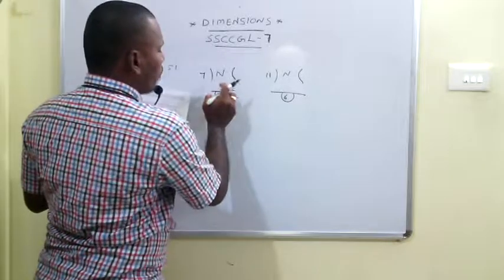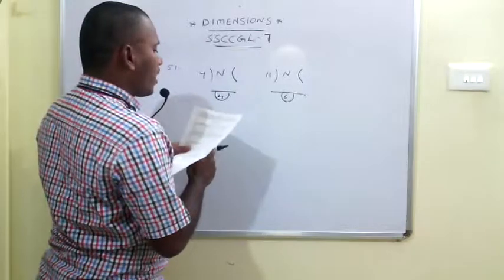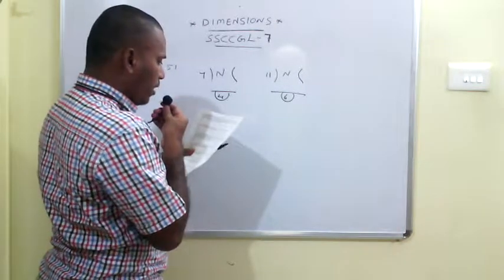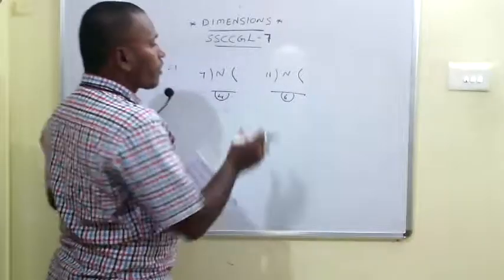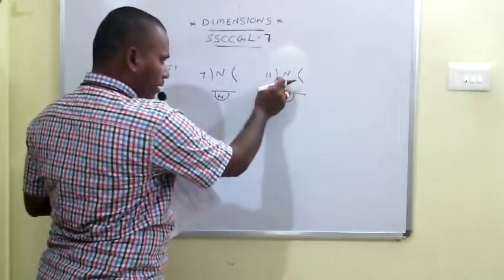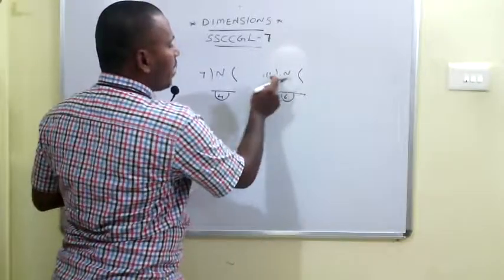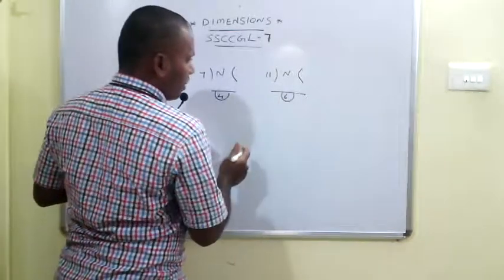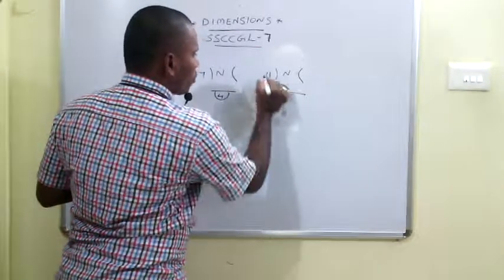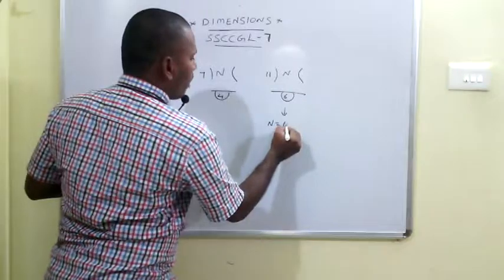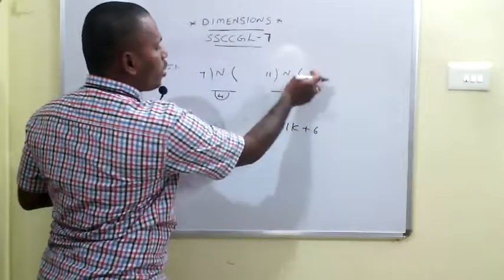We need to find the value of n satisfying both conditions, then find the remainder when n is divided by 13. Since n divided by 11 gives remainder 6, n can be expressed as n = 11k + 6 for some integer k.